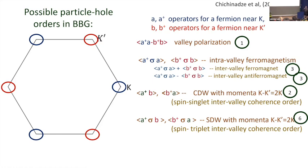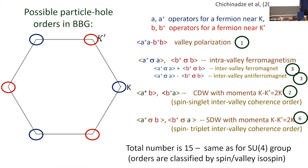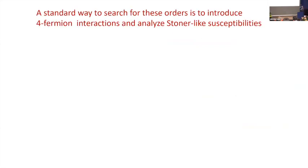If you count how many order parameters you can write down — for example for spin you have three order parameters for x, y, z, and for charge density wave or spin density wave you get a factor of two because the order parameter is complex (A†B is not the same as B†A) — then the total number is 15. This immediately brings up the issue of SU(4) symmetry: the number of generators of SU(4) is 4² minus 1 = 15. It's not unusual because with spin and isospin (A and B as two components), you naturally get SU(4).